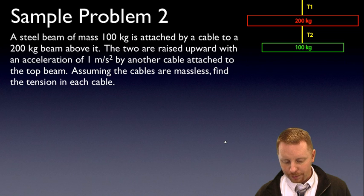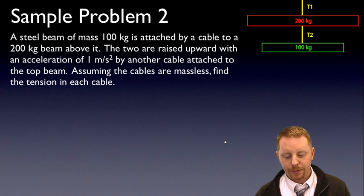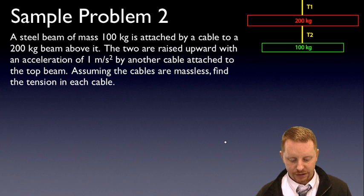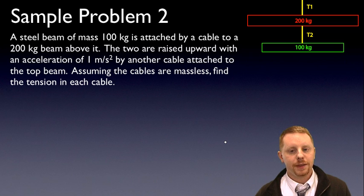Let's take a look at our first problem here. We have a steel beam of mass 100 kilograms, and it's attached by a cable to a 200 kilogram beam above it. The two are raised upward with an acceleration of 1 meter per second squared by another cable attached to the top beam. If we assume the cables are massless, let's find the tension in each cable.